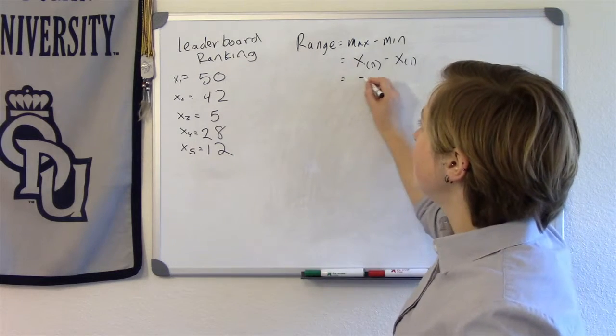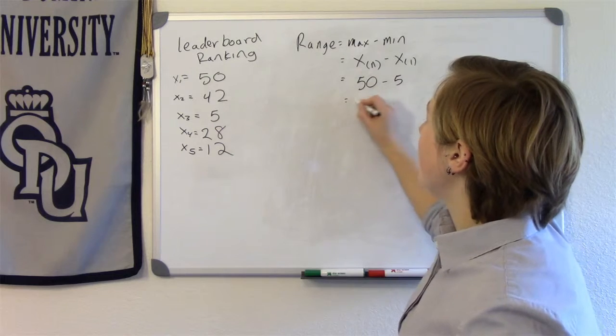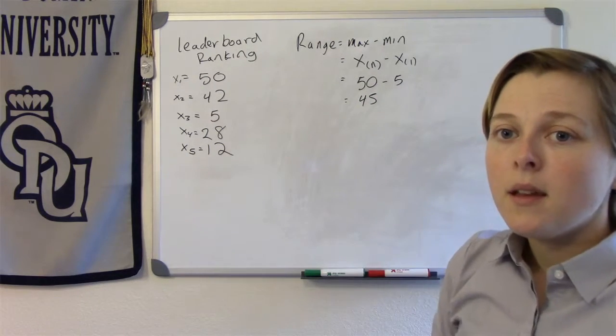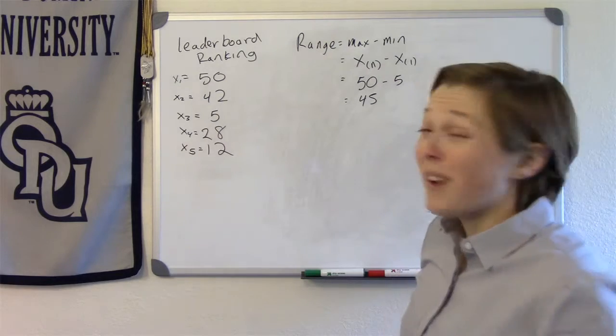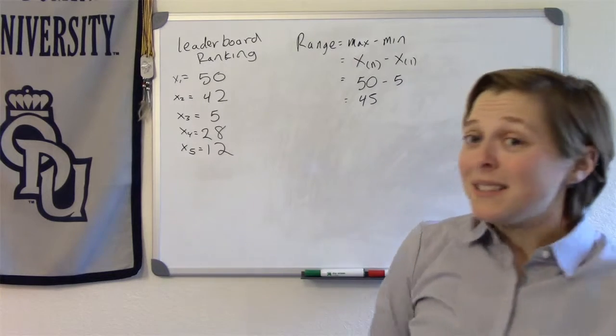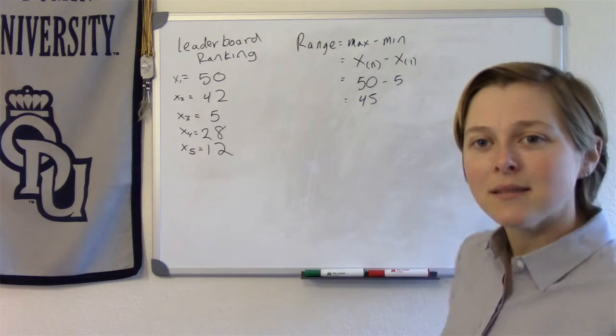What's our max value? 50. Our min value is 5, so the range for this sample is 45. So range, super easy to calculate, that's a big deal, but it can be highly influenced by outliers.